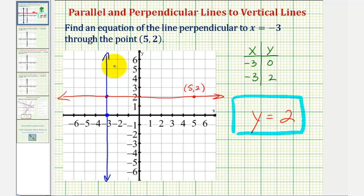And just to review, the slope of a vertical line is undefined, or we say it has no slope. And the slope of a horizontal line is zero.